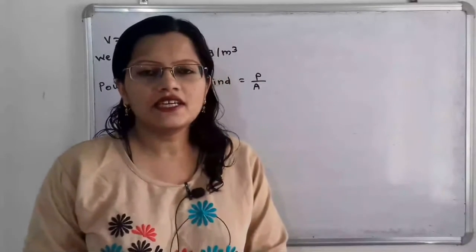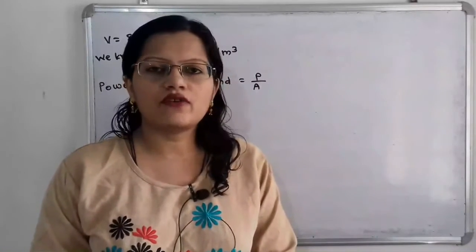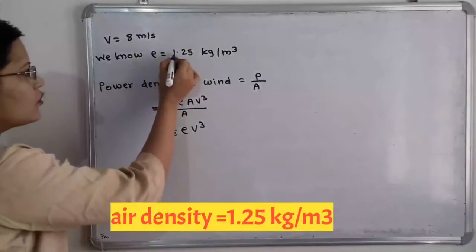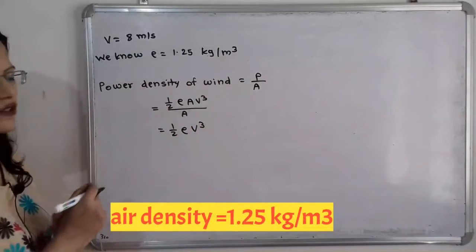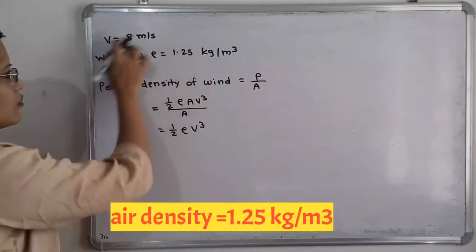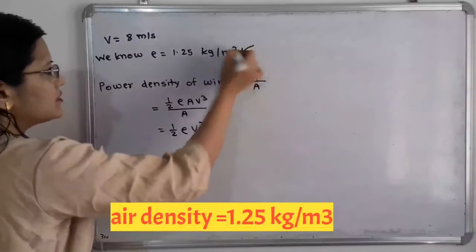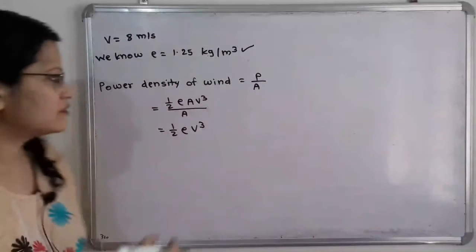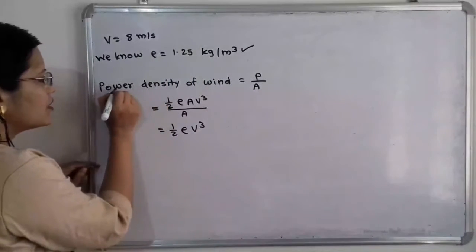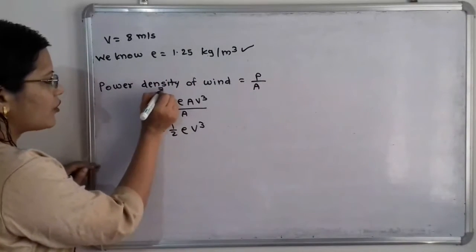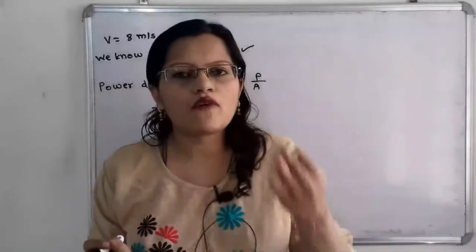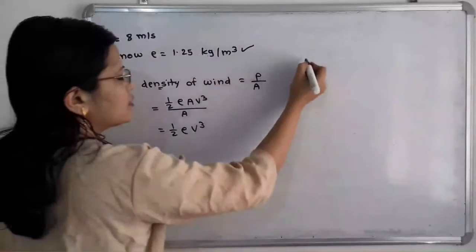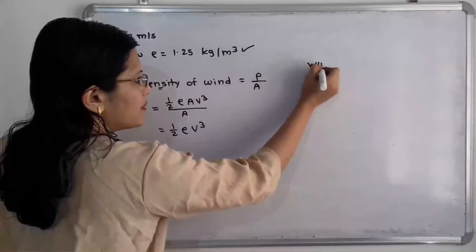We first have to find out the density. We will take the density rho equal to 1.25 kilogram per meter cube — this is the density of the air. The power density of wind means we have to find out the power per unit area, and the unit should be watts per meter square.